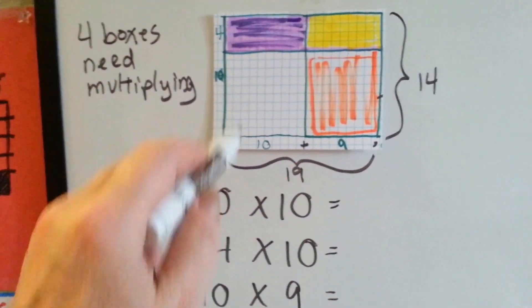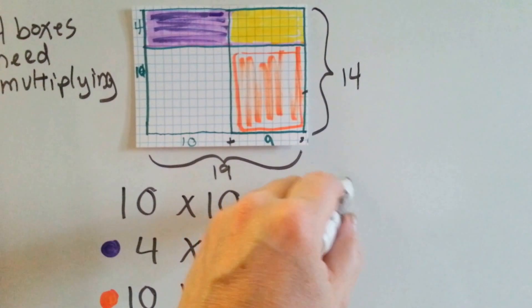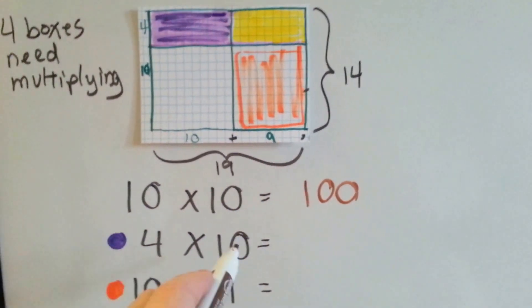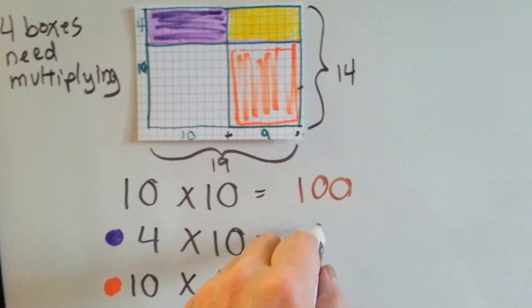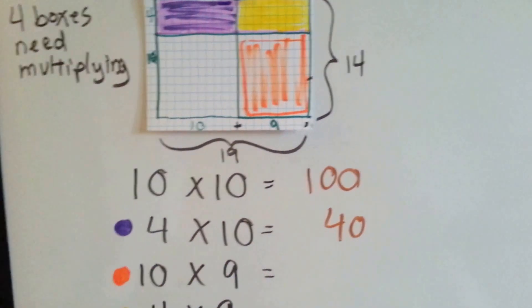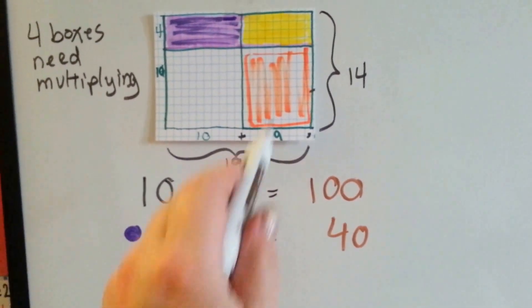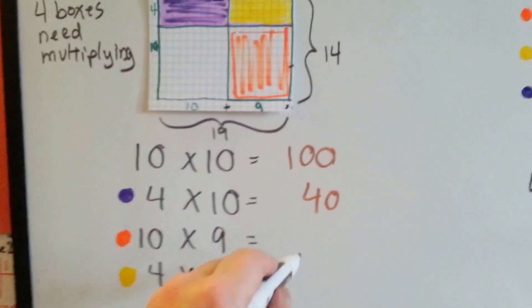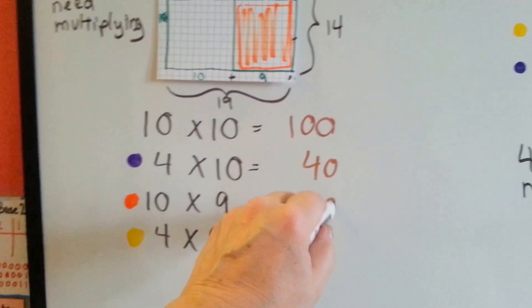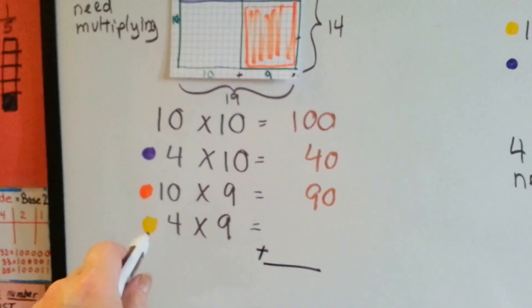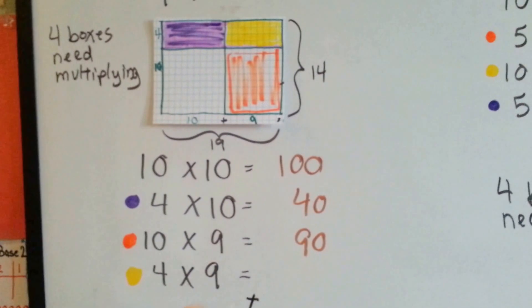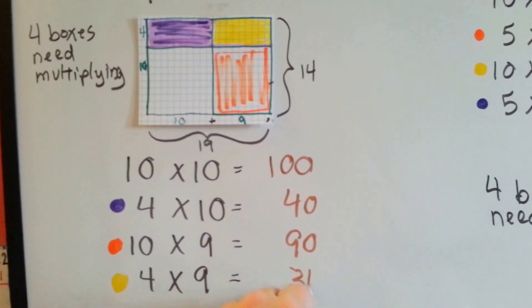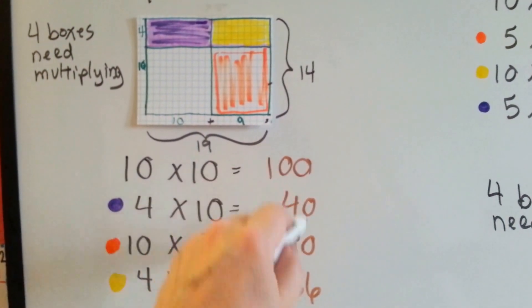Now we've got a 10 times 10. And that's 100. We've got a 4 times 10, which is the purple space. And that's 40. We've got a 10 times 9, which is the orange space. And that's 90. And we've got a yellow space of 4 times 9, which is 36.